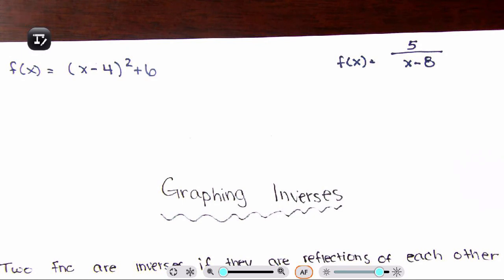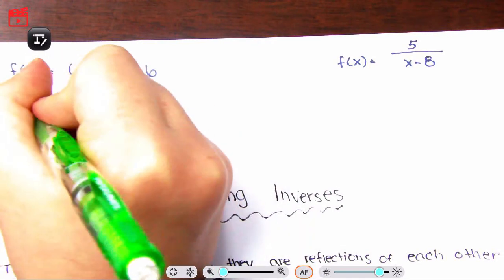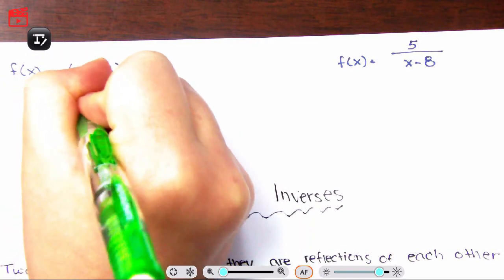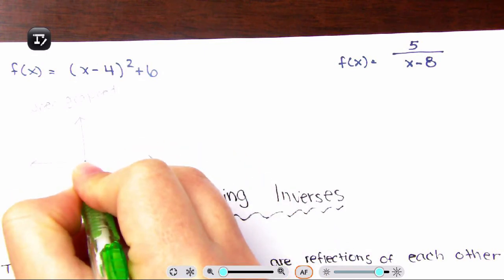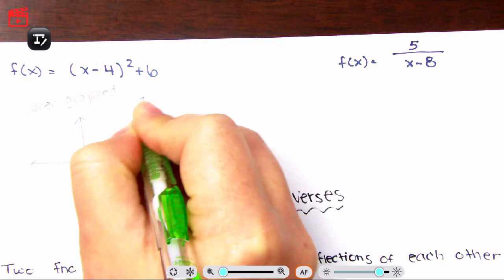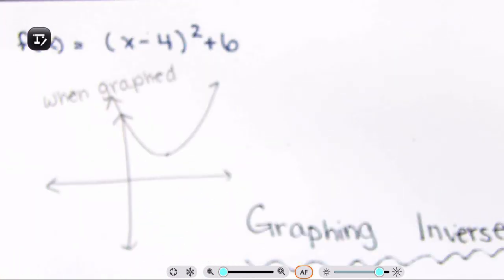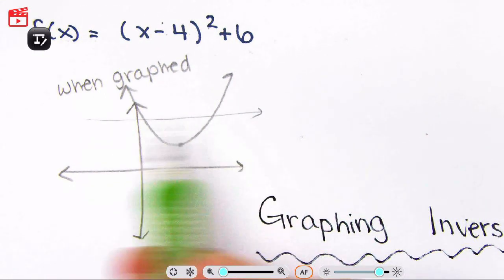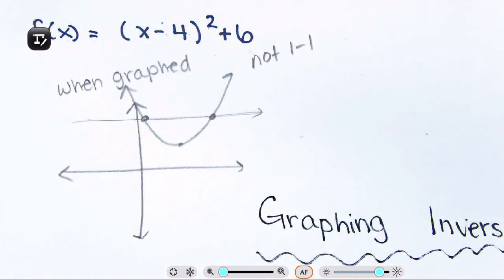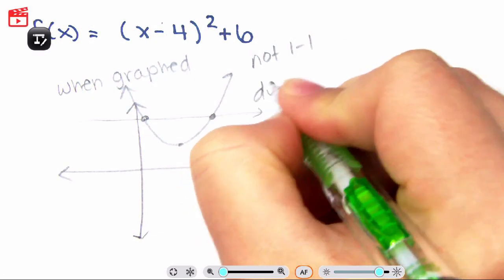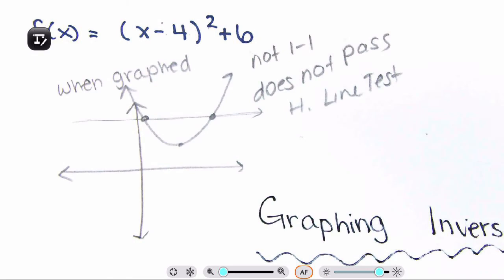Here's an important example. f(x) equals (x minus 4) squared plus 6. If you graph this, it will look like a parabola. Notice it will not pass the horizontal line test — my horizontal line hits it twice. So it is not one-to-one and there is no inverse. You can write 'does not pass the horizontal line test.' Be careful, there will be some tricky questions.